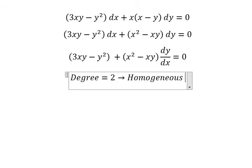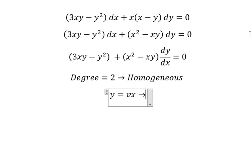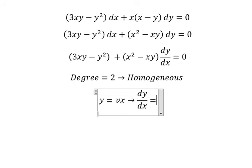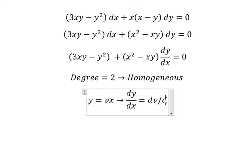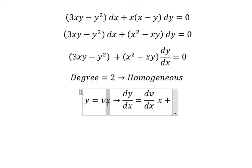So I will use y equals vx. Later we do the derivative for both sides. This one we have (dv/dx) multiplied by x, this one we have v, so we have (dv/dx)x + v.